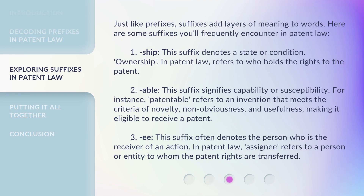Just like prefixes, suffixes add layers of meaning to words. Here are some suffixes you'll frequently encounter in patent law. 1. -ship — this suffix denotes a state or condition. Ownership, in patent law, refers to who holds the rights to the patent. 2. -able — this suffix signifies capability or susceptibility. For instance, patentable refers to an invention that meets the criteria of novelty, non-obviousness, and usefulness, making it eligible to receive a patent. 3. -ee — this suffix often denotes the person who is the receiver of an action. In patent law, assignee refers to a person or entity to whom the patent rights are transferred.